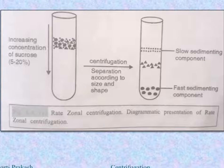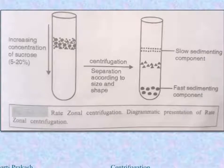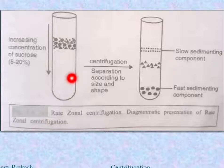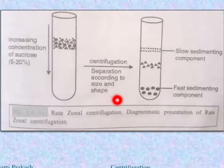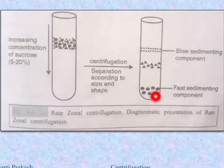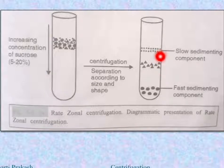This figure illustrates a rate zonal separation process and the criteria for successful rate zonal separation. We can see in this tube the increasing concentration of sucrose. On centrifugation, the separation is according to size and shape. The fast sedimenting component is at the bottom, then the medium sedimenting component, and at the top is the slow sedimenting component.